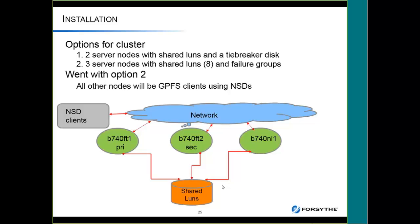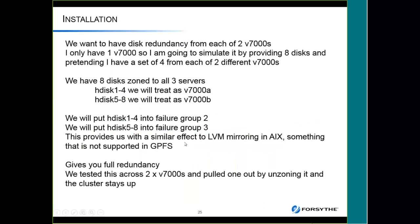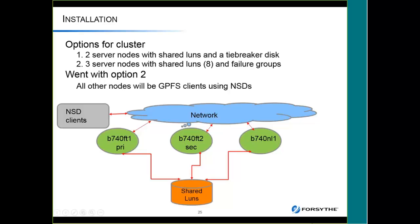Failure groups allow you to split the LUNs — half in one failure group and half in the other. You can lose up to half your LUNs in one failure group and still be up and running because failure groups effectively do mirroring. The environment we built has three LPARs: FT1, FT2, and NL1. They happen to be on the same server but could be on different servers. They're all fiber connected to the same eight disks — two using virtual SCSI and one using NPIV. I also have one client called BPICSD that is network connected only.